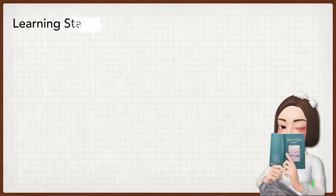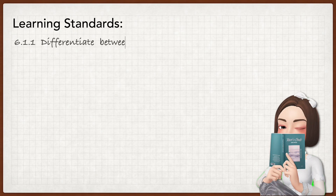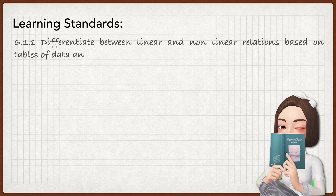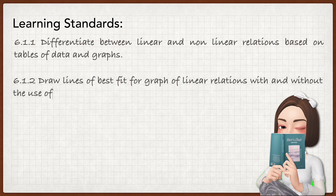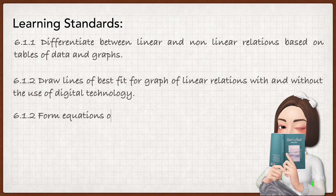Let's have a look at the learning standards. 6.1.1: differentiate between linear and non-linear relations based on tables of data and graphs. 6.1.2: draw lines of best fit for graphs of linear relations with and without the use of digital technology. Also 6.1.2: form equations of lines of best fit.